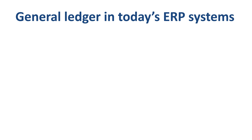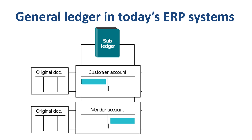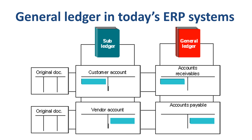Today's enterprise resource planning systems are a lot less manual, and the closing cycle tends to be a lot faster, but the general idea of subledgers and general ledger is still the same. For example, in an ERP system like SAP, original documents are registered in the accounts receivable subledger by customer account, and in the accounts payable subledger by vendor account. The amounts posted in the subledger are then transferred from the subledger to accounts in the general ledger.